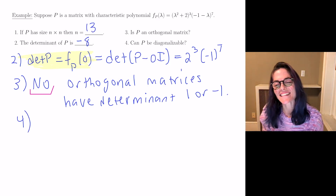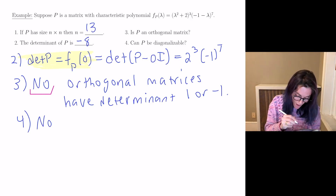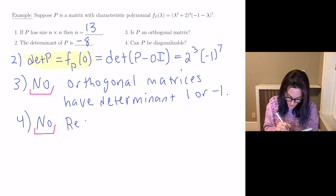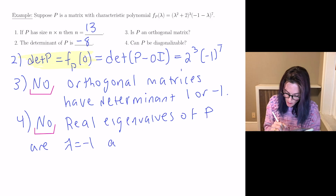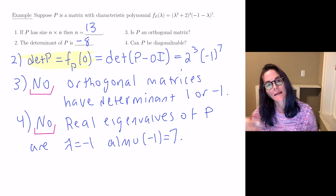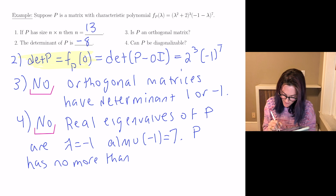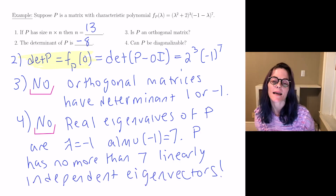Can P be diagonalizable? This is also a no — definitely not, not over the real numbers, which is what we are working over in this course. The real eigenvalues of P are only lambda equals minus 1, with algebraic multiplicity 7. So P has no more than 7 linearly independent eigenvectors, but we need 13. Definitely P cannot be diagonalizable.